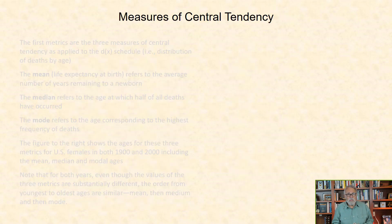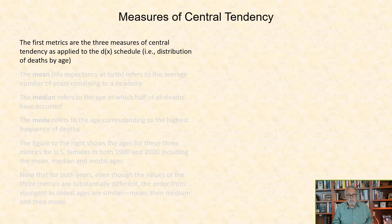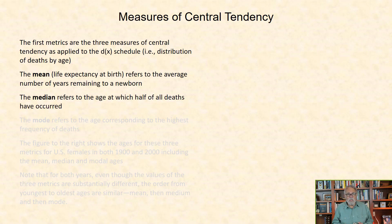The first are the three measures of central tendency that are applied to the DX schedule or distribution of deaths by age. The first is mean, which is also life expectancy at birth. It refers to the average number of years remaining to a newborn. Median refers to the age at which half of all deaths have occurred.